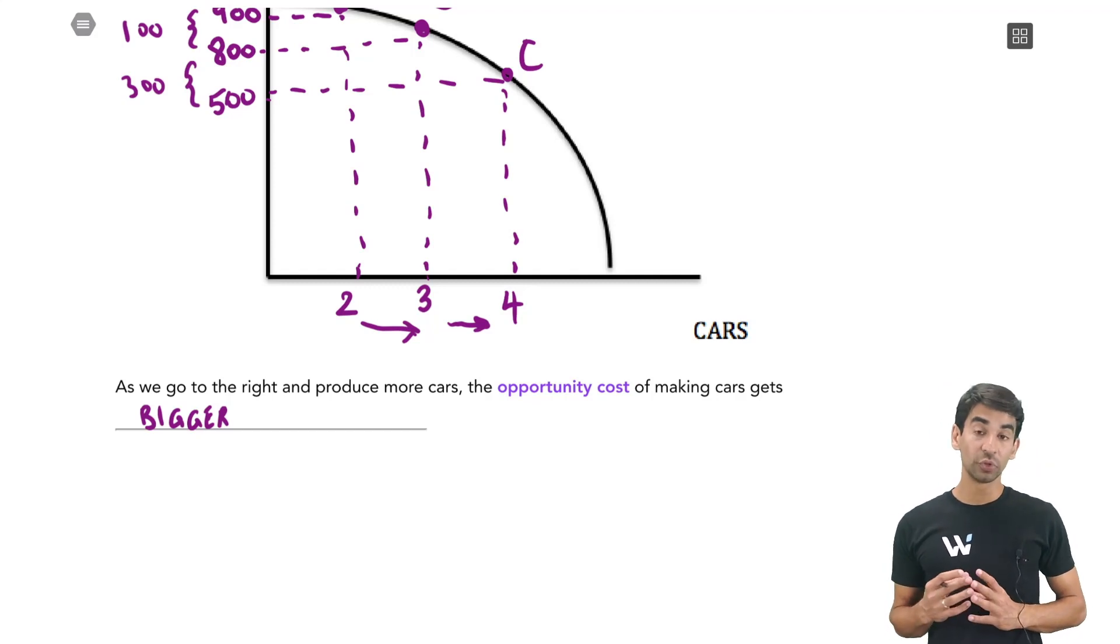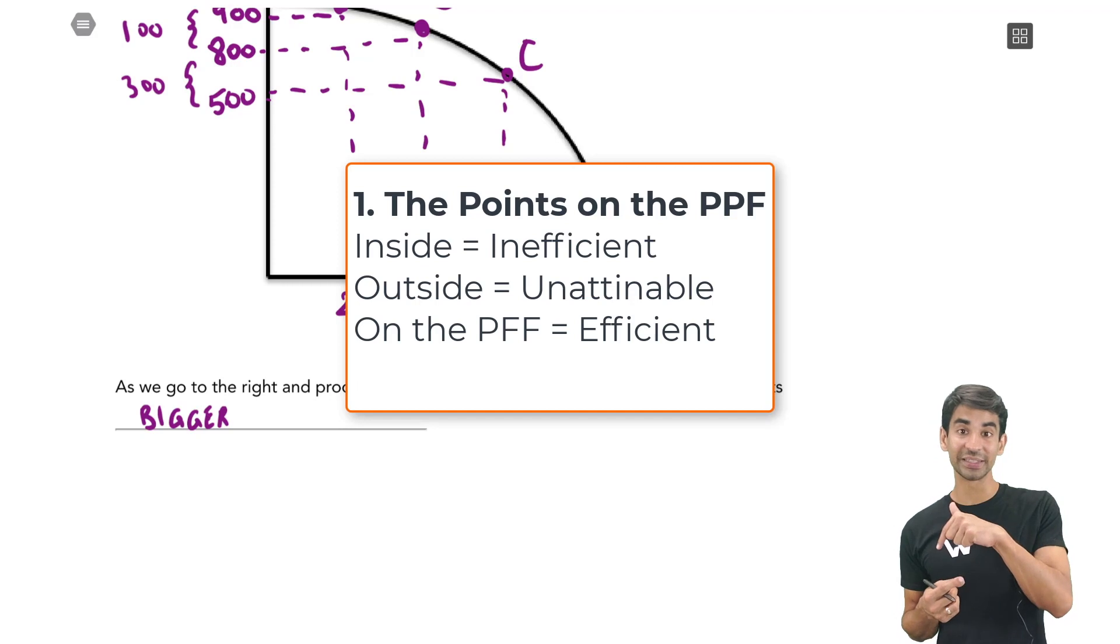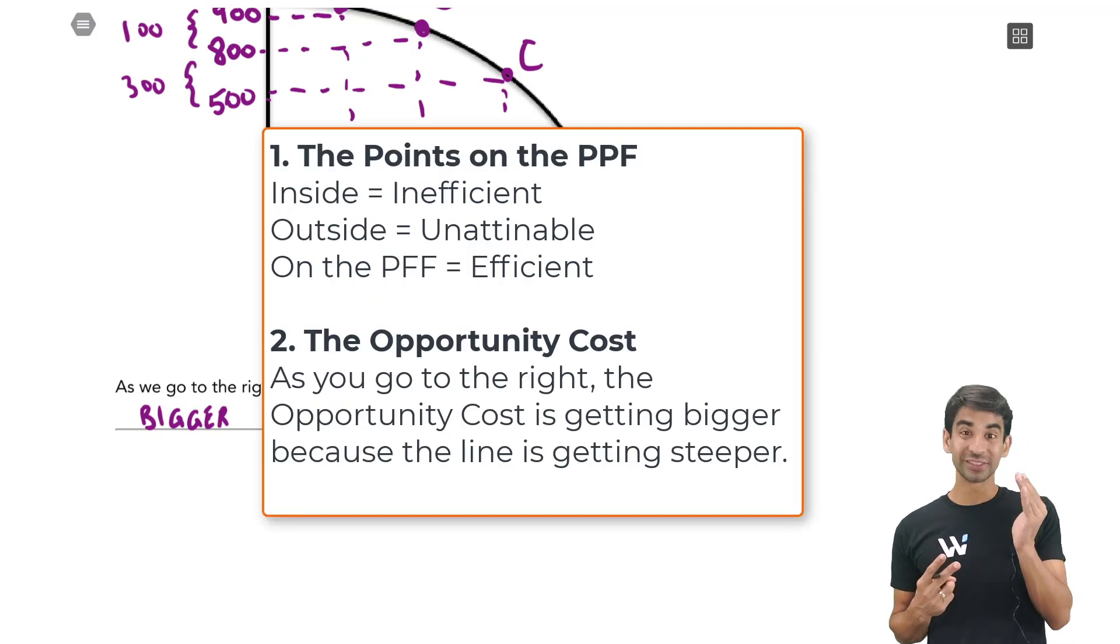So main concept to know about PPF is two things. One is the points. Inside is inefficient, outside is unattainable, and on the PPF is efficient. And the second thing is about opportunity cost. As you go to the right, the opportunity cost is getting bigger because the line is getting steeper. Those are the main two things. And that's very, very important, very commonly tested.